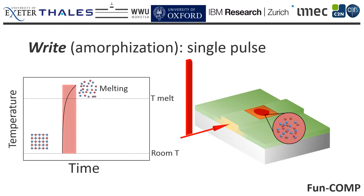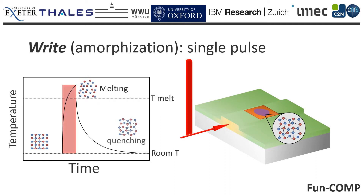Once the optical pulse is withdrawn, the thermal energy is quickly dissipated through the waveguide substrate, freezing the disordered atomic arrangement into a glassy or amorphous phase.